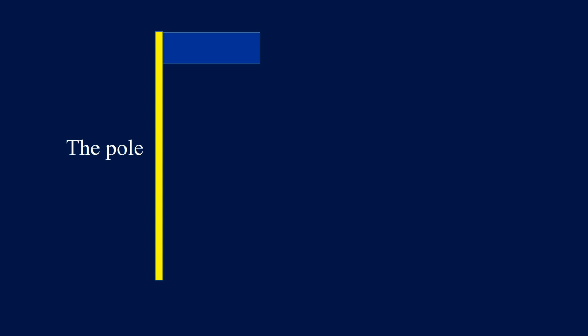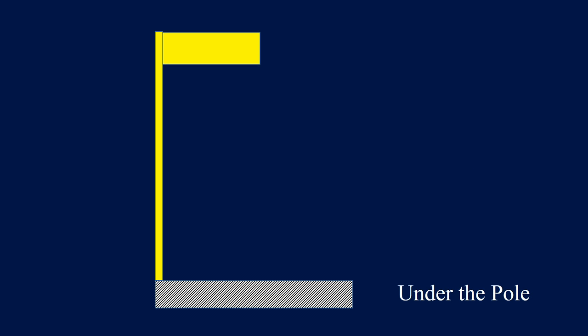Now we're going to talk about the flags and scopes. This is a flag with pole — it is the flag and it is the pole. We say this area is in the flag, this area is under the flag, and this area is under the pole.